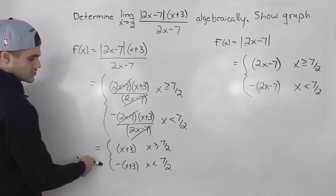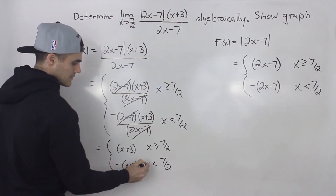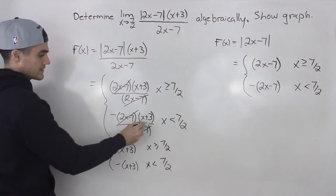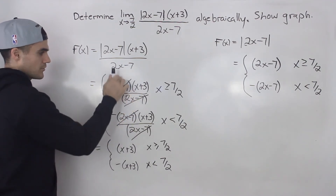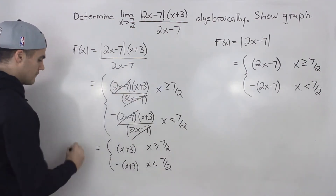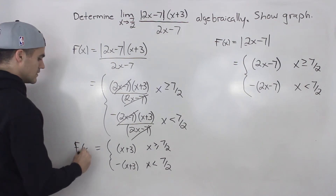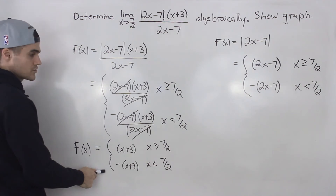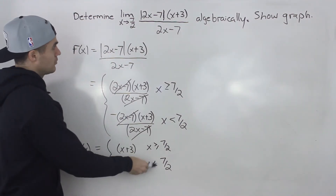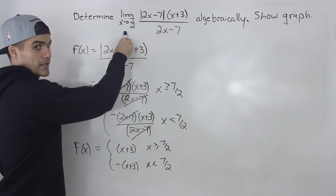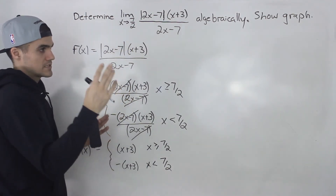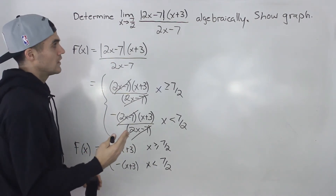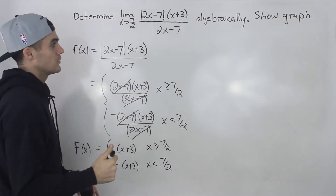Notice that the expressions in the numerator and denominator are equal, so they cancel out. We get a simplified piecewise function: f(x) equals x plus 3 when x is greater than or equal to 7 over 2, and negative (x plus 3) when x is less than 7 over 2. The meeting point of this piecewise function is x equals 7 over 2, so we need to compute each one-sided limit.